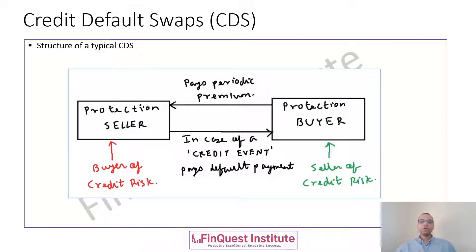These are actually good products which will help market participants manage credit risk to a significant extent. But the overall build-up which led to the global financial crisis caused these products to be termed as risky. But if used judiciously, they are immensely useful when it comes to transferring or managing credit risk on a bank's portfolio. So let's start to understand the structure of a CDS.